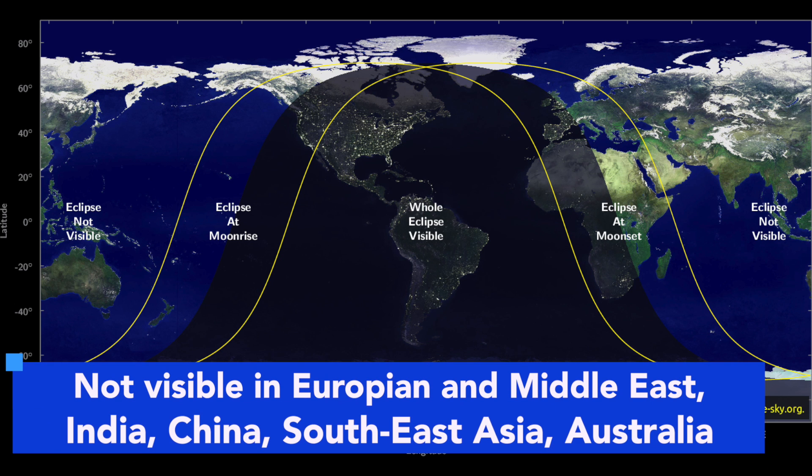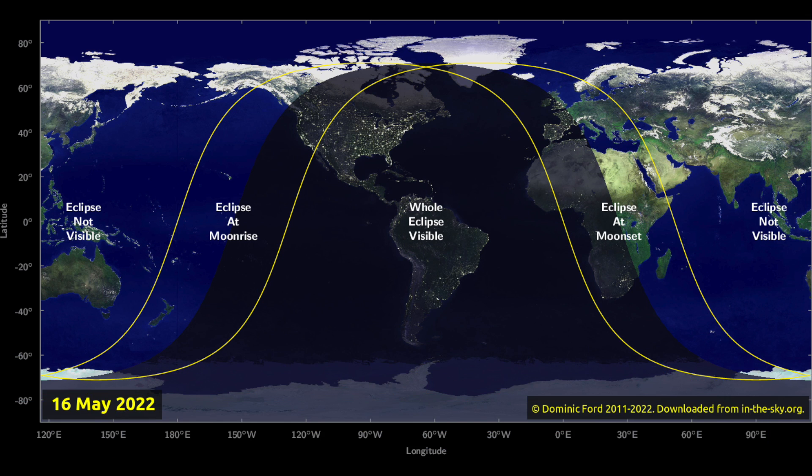The eclipse, however, will not be visible in many European and Middle East countries, India, China, Southeast Asia, and Australia. Here is an animation to help you visualize the path of the eclipse. As we can see, most of the eclipse will occur in the region of the Atlantic Ocean.